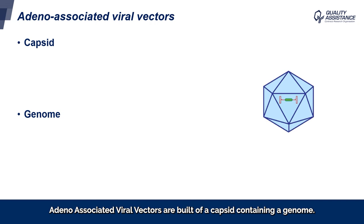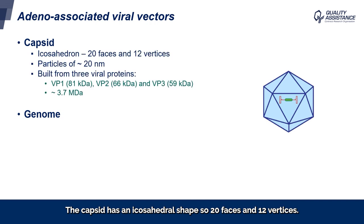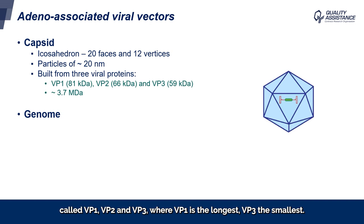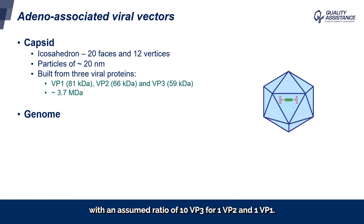Adeno-associated viral vectors are built of a capsid containing a genome, and they are used to deliver therapeutic genes. The capsid has an icosahedral shape, so 20 faces and 12 vertices. The particle size is around 20 nanometers, and these capsids are built from three viral proteins called VP1, VP2, and VP3, where VP1 is the longest and VP3 the smallest. The amino sequence from VP3 is common to the three proteins. The entire capsid is composed of around 60 of these proteins, where VP3 is the most abundant, with an assumed ratio of 10 VP3 for 1 VP2 and 1 VP1. Overall, the capsid has a molecular weight of around 3.7 megadalton.